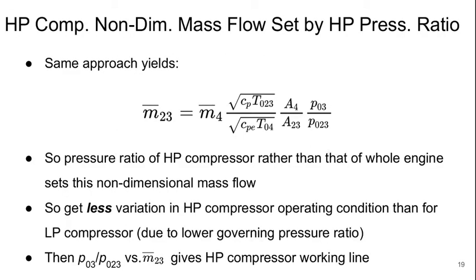For the high-pressure compressor, the non-dimensional mass flow is set by the high pressure shaft pressure ratio. And so, from the same approach, we can get to M bar 2.3 is again related to M bar 4. And then the subscripts on the terms are just different.